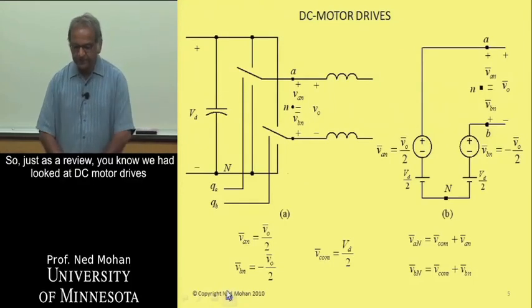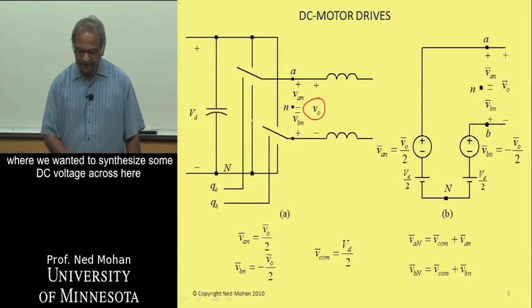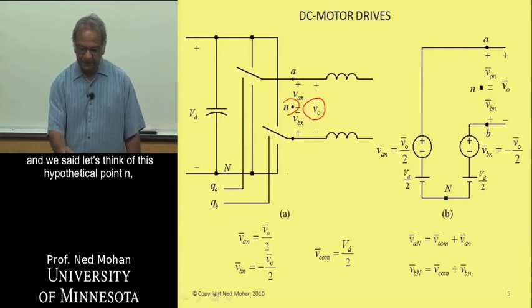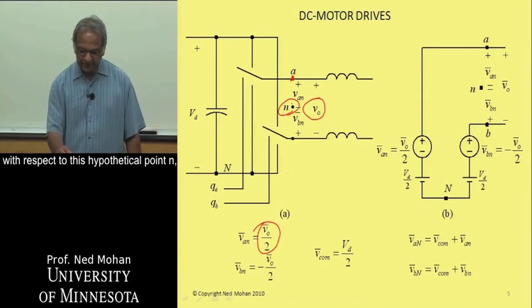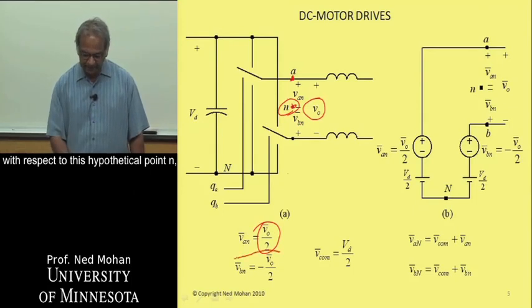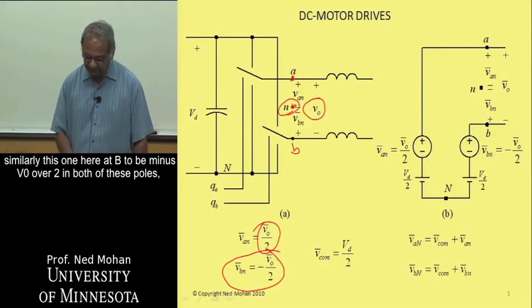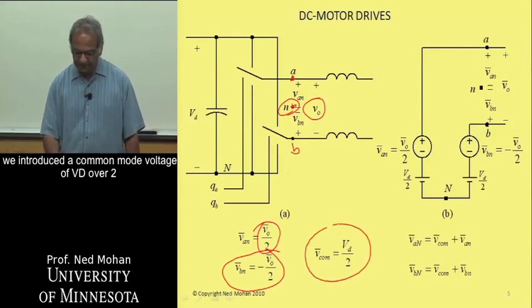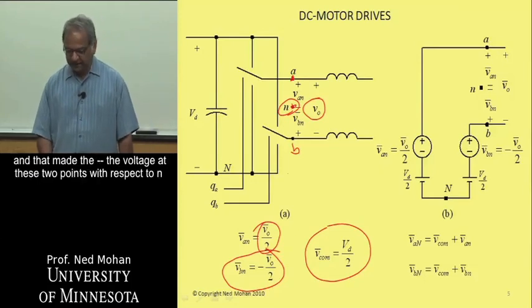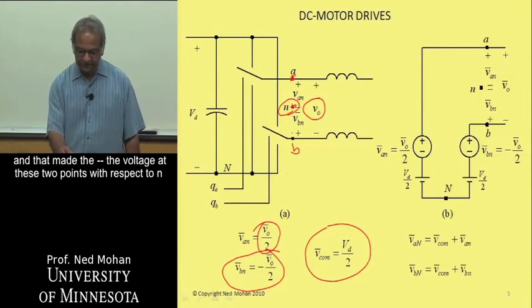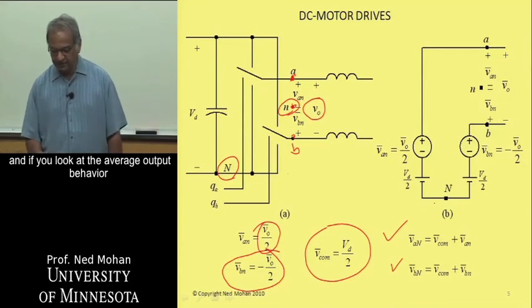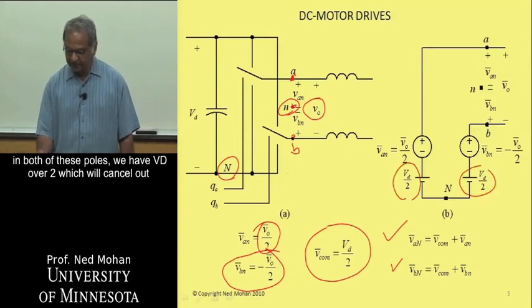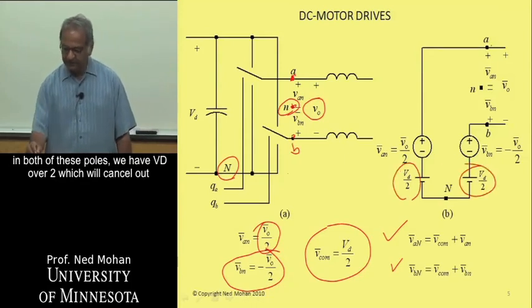So just as a review, we had looked at DC motor drives where we wanted to synthesize some DC voltage, and we said let's think of this hypothetical point N, and we have V0 over 2 to be the voltage at this point with respect to this hypothetical point N. Similarly, this one here at B to be minus V0 over 2. In both of these poles, we introduced a common mode voltage of Vd over 2, and that made the voltage at these two points with respect to N to be given by these two expressions here. And if you look at the average output behavior, in both of these poles, we have Vd over 2, which will cancel out from A to B.